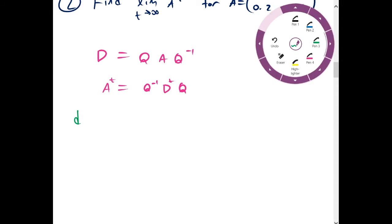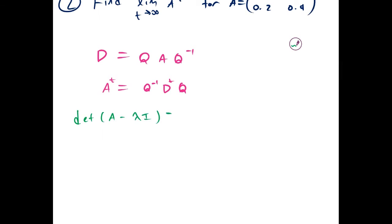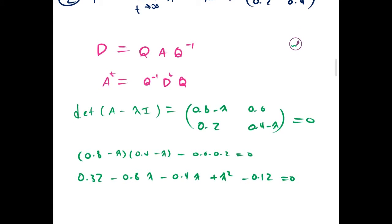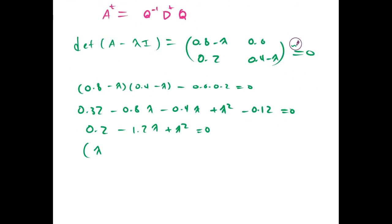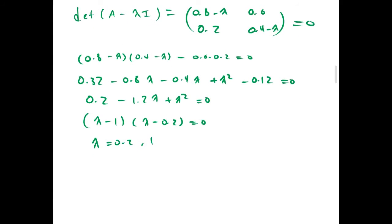The way we diagonalize is we take the determinant of A minus lambda I, which is (0.8 - λ, 0.6; 0.2, 0.4 - λ). The determinant ends up being (0.8 - λ)(0.4 - λ) minus 0.6 times 0.2. This gives us λ² - 1.2λ + 0.2 = 0, which factors as (λ - 1)(λ - 0.2) = 0. We get λ equals 0.2 or 1, so our diagonal matrix is D = (0.2, 0; 0, 1).